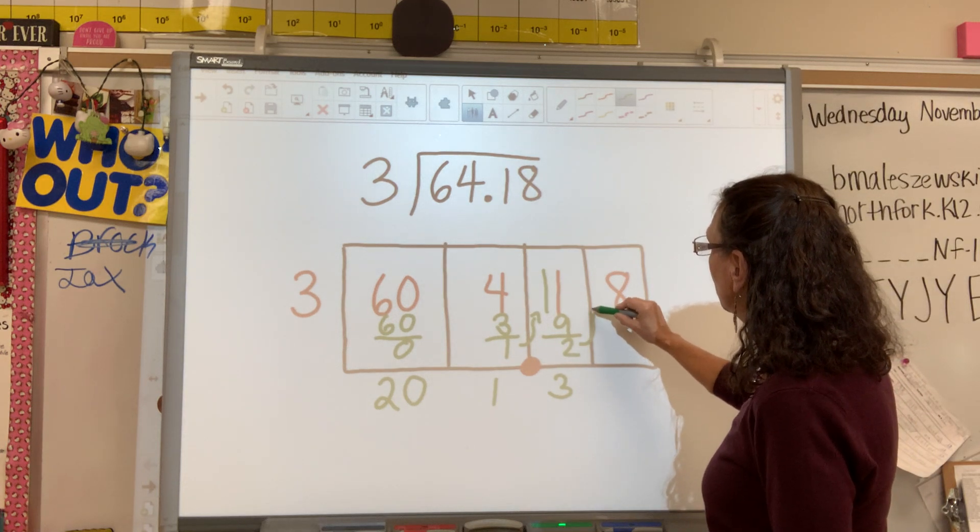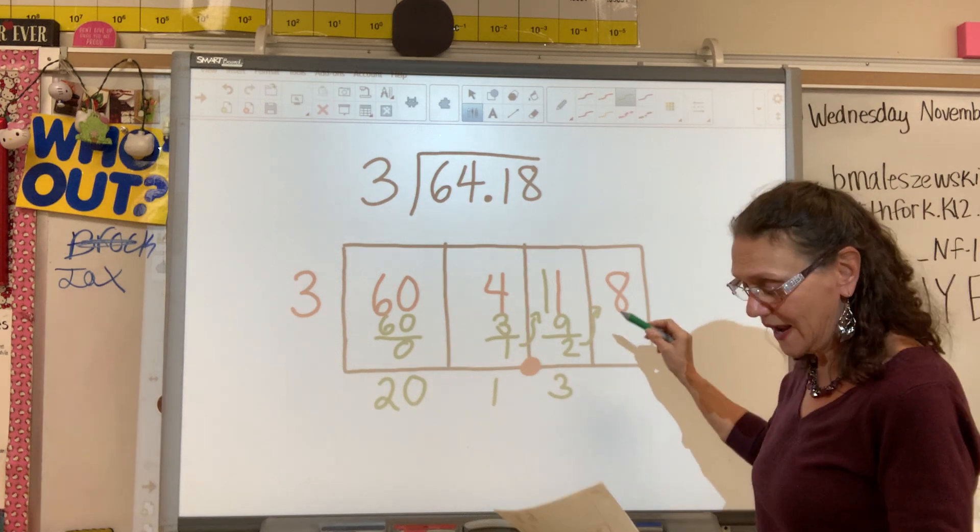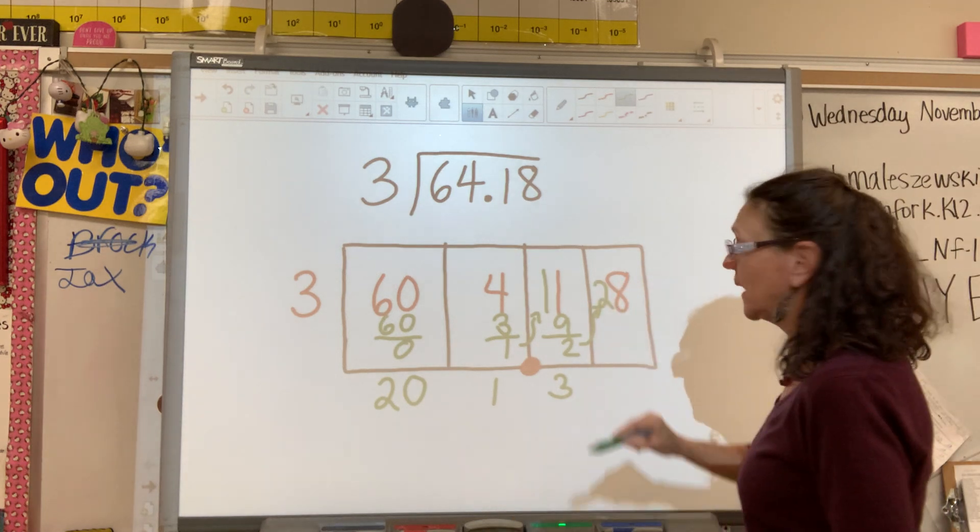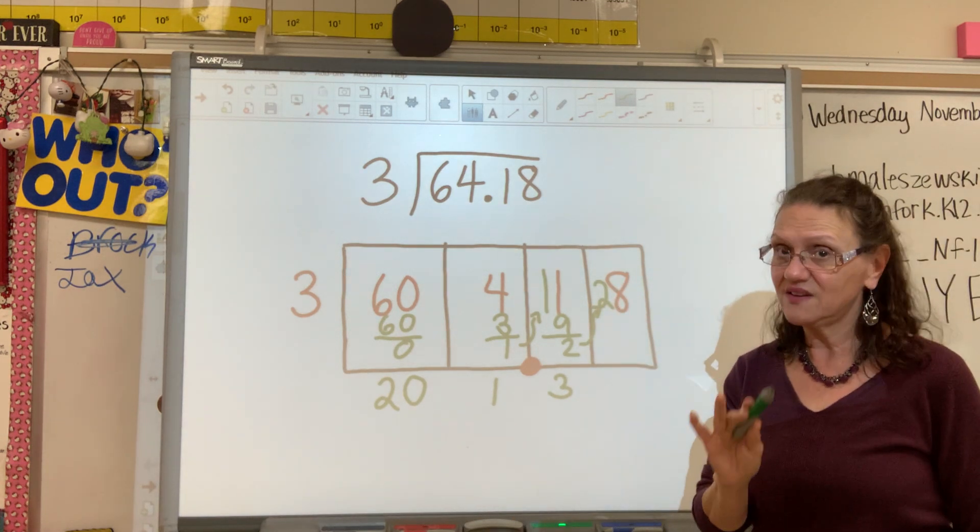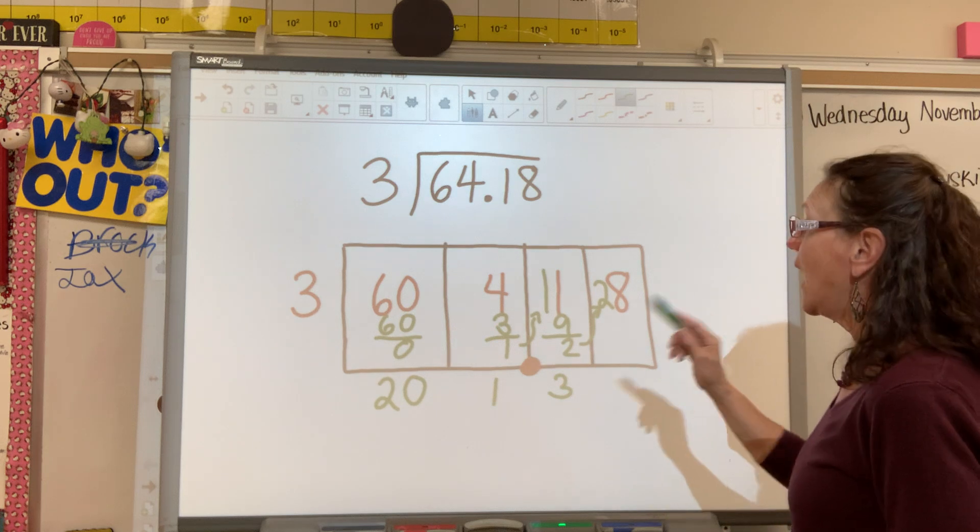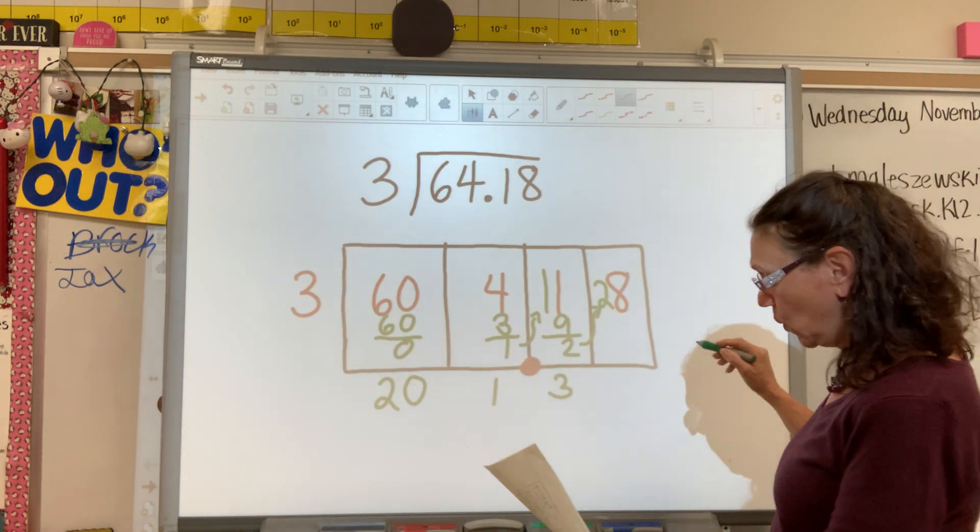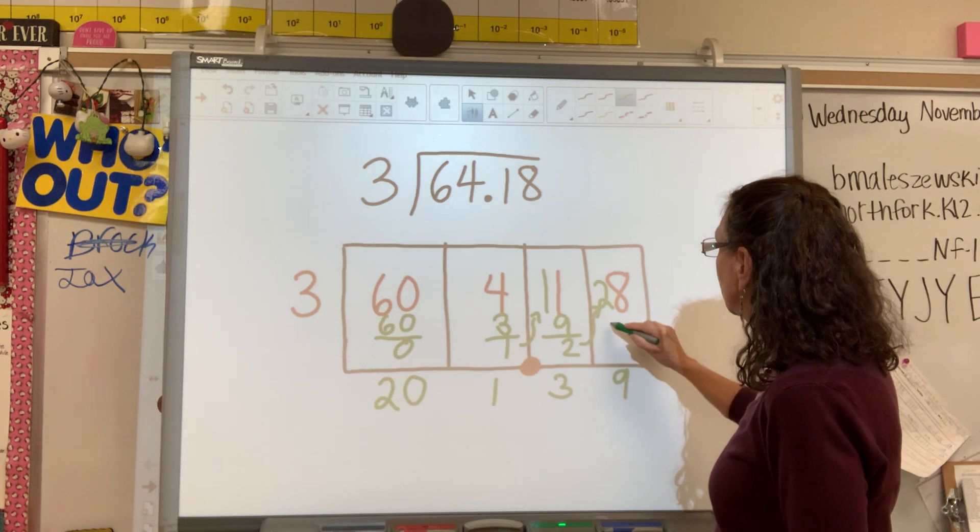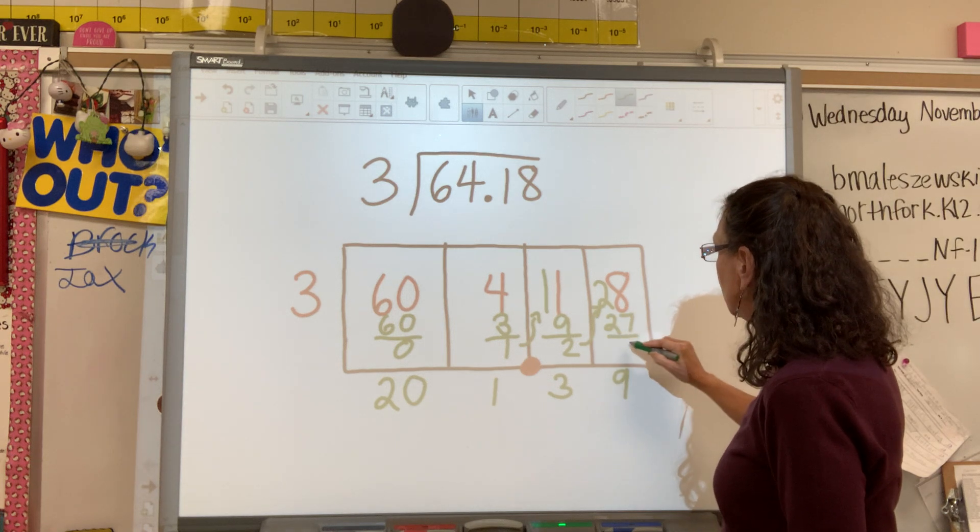That's my leftover. And it goes up here and I don't add it to my eight. I put it in front of my eight. That's my biggest difference with this method. How many times does three go into 28? It goes in nine times and that gives me 27 and I subtract.